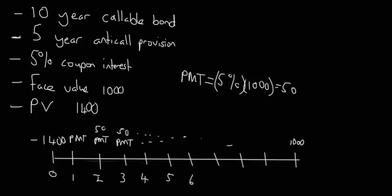The important thing to notice is that the face value is 1000 because if you held this bond all the way through until maturity, then you would receive the 1000 dollars back. However, in this question we have a 10-year bond, but there's a 5-year anti-call provision, so they can't call the bond for the first 5 years.